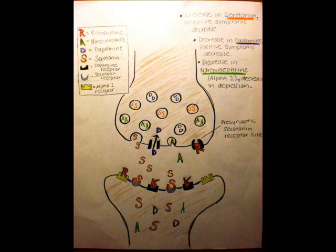When negative symptoms are present, there are decreased serotonin levels in the brain. Risperidone then blocks a serotonin 2A receptor, causing an increase in the chemical and therefore reducing the negative symptoms. Risperidone also acts as an antagonist at alpha-1 and alpha-2 receptor sites, where norepinephrine is received, and this causes a decrease in depression.